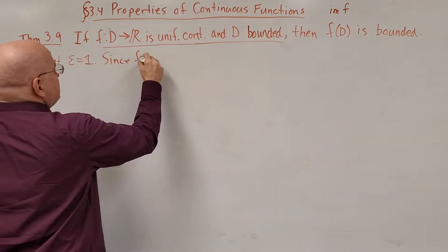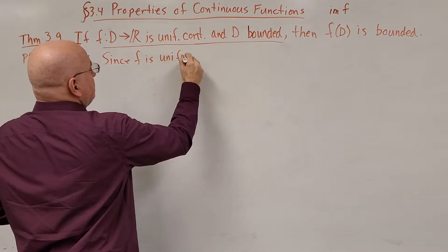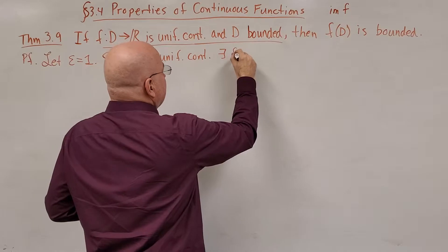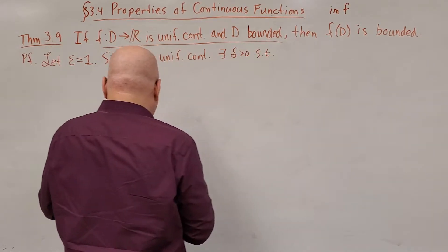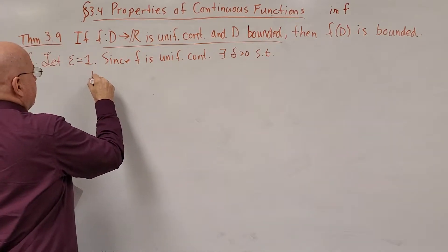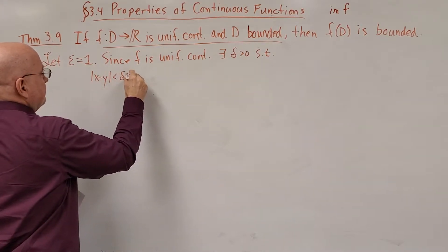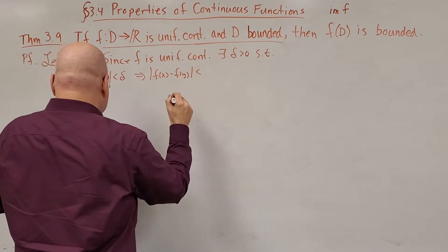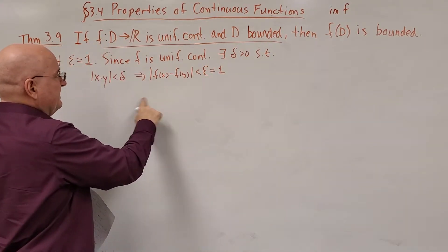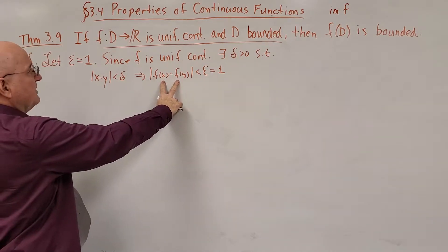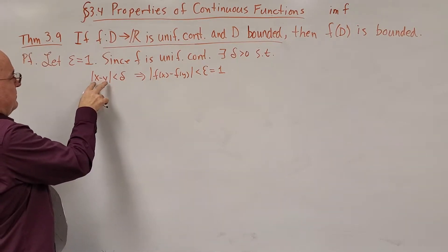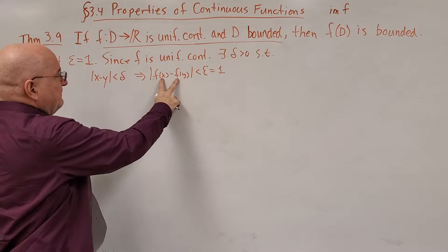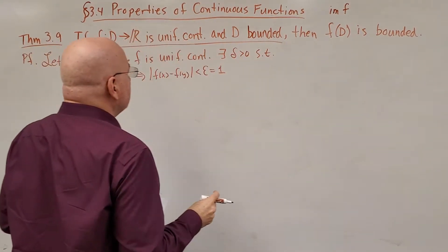Since f is uniformly continuous, there exists a delta greater than 0, such that |x - y| less than delta implies |f(x) - f(y)| is less than delta, which is, for us, 1. So this distance would be less than 1, the distance between these two values. I left off the part where x and y both have to be in the domain here in order for this to be true. Otherwise, f(x) or f(y) wouldn't exist.